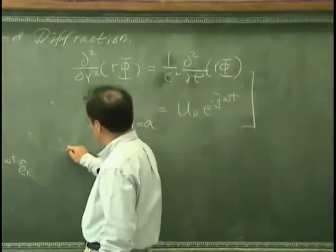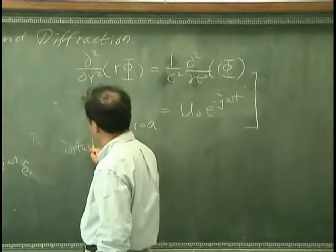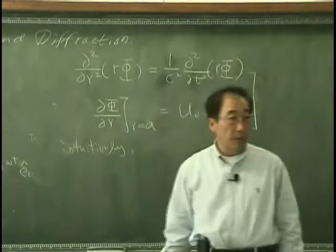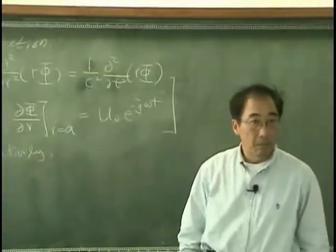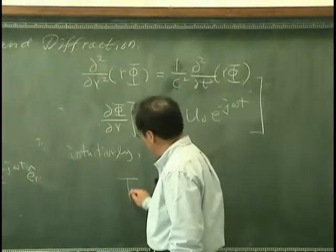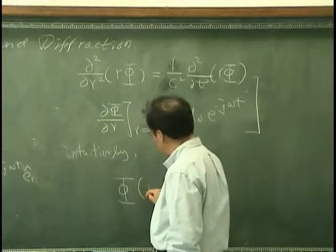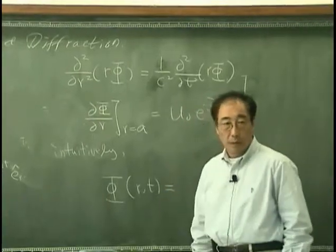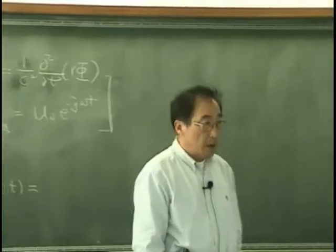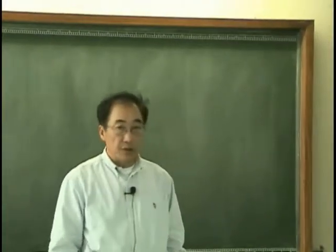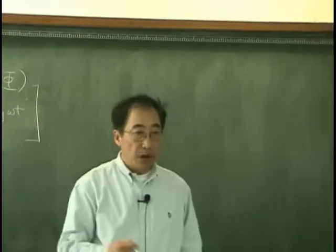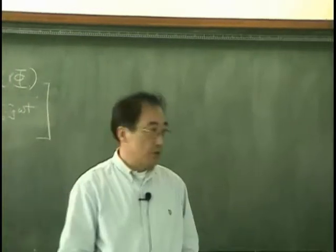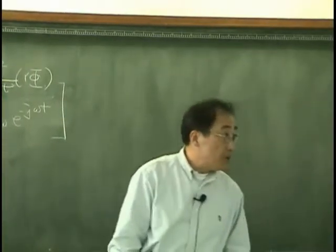Intuitively, we know that this velocity potential is a function of r and t. So r is not necessary to be a vector, because there is only one dependence in r direction. Intuitively, we just do we use scalar r? That's okay.